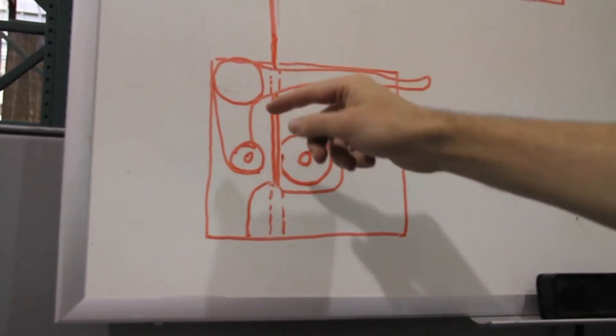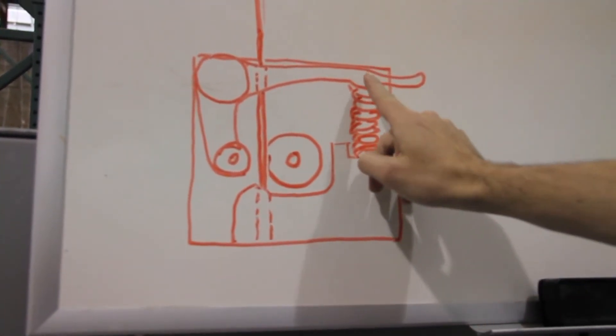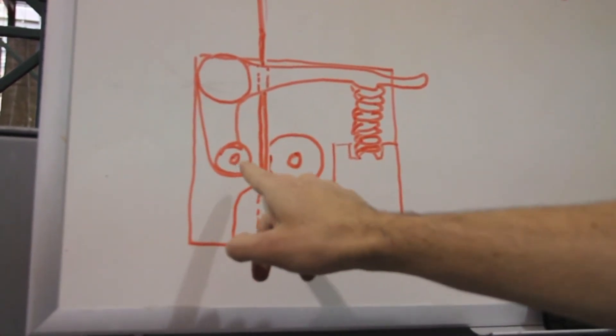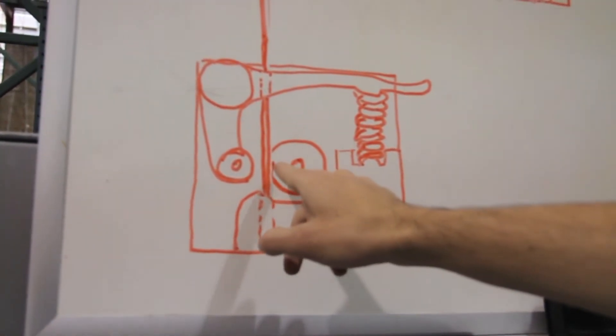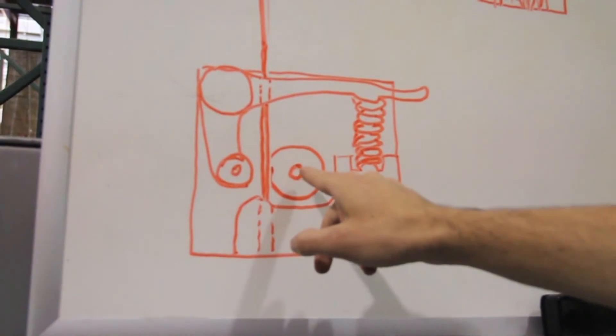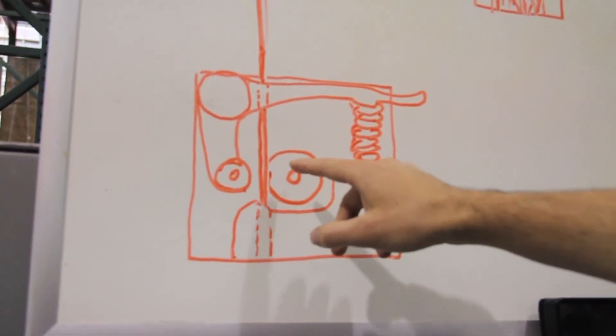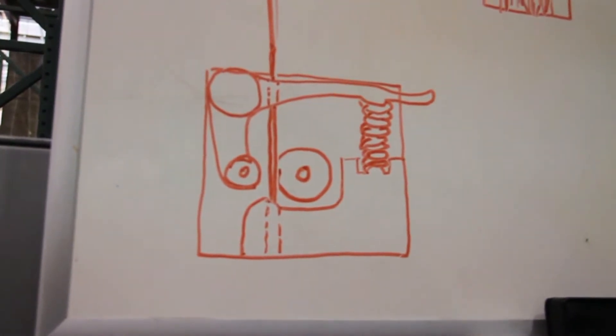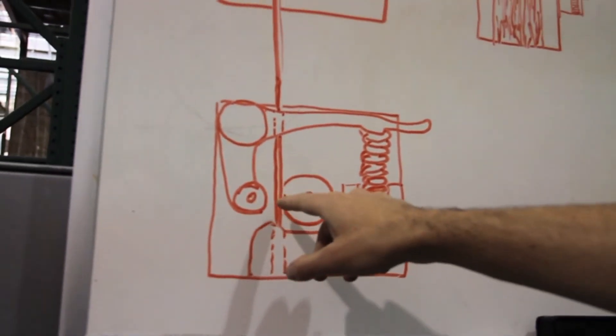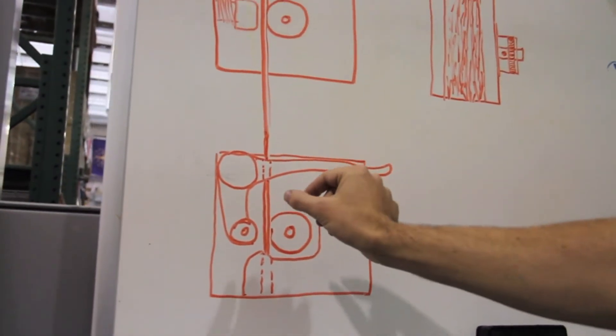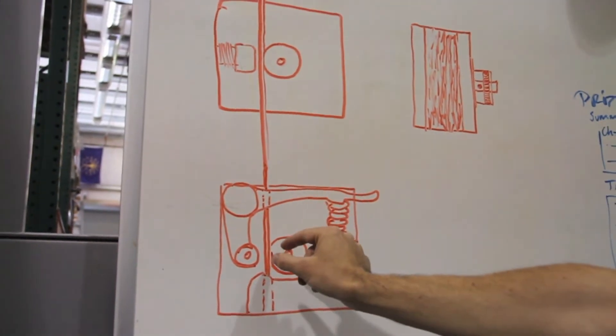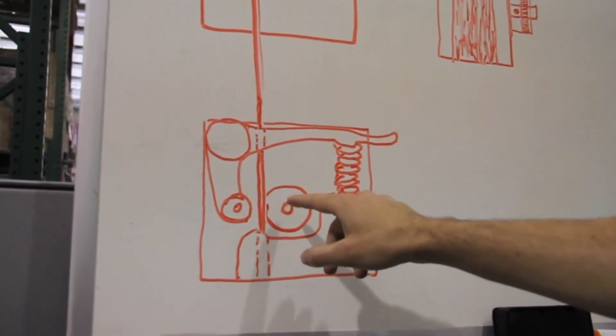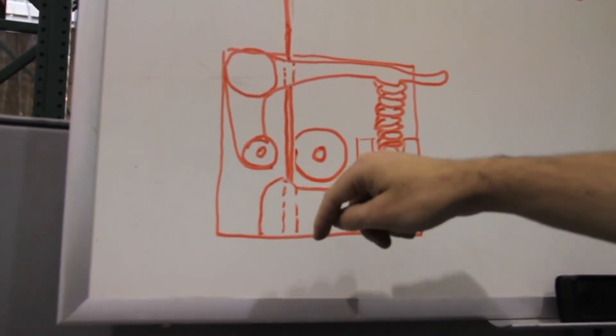They actually have a lever arm that has a spring that forces a ball bearing into the filament, forcing it into the pulley. So whereas the plunger design was a constant position, this actually provides a constant pressure. So as the filament diameter changes, it continues to apply the same amount of pressure and therefore you get the same amount of force out of this pulley.